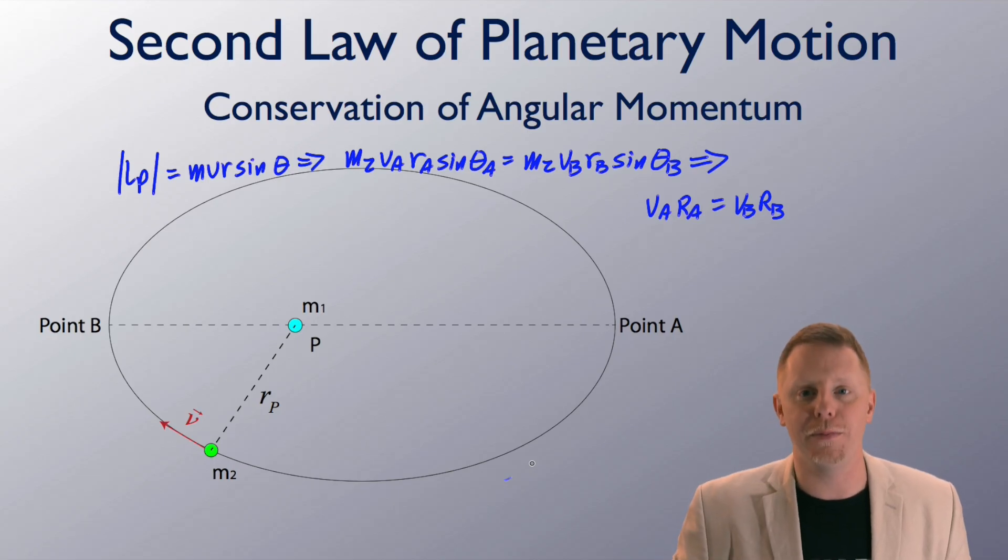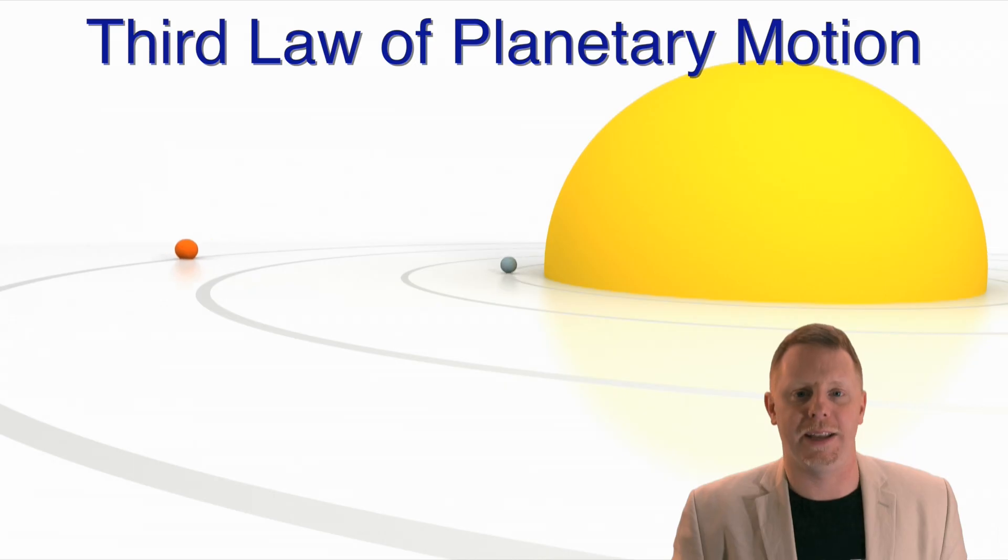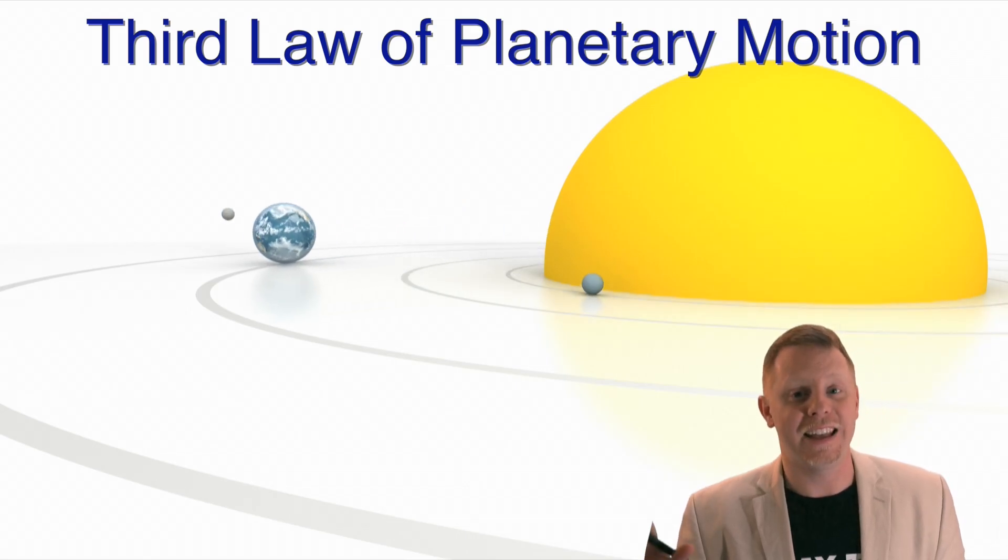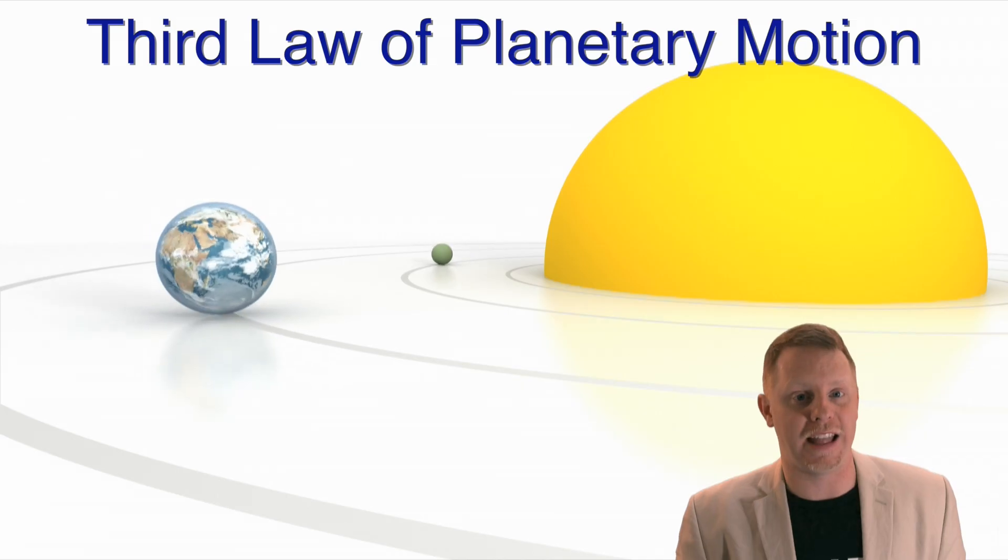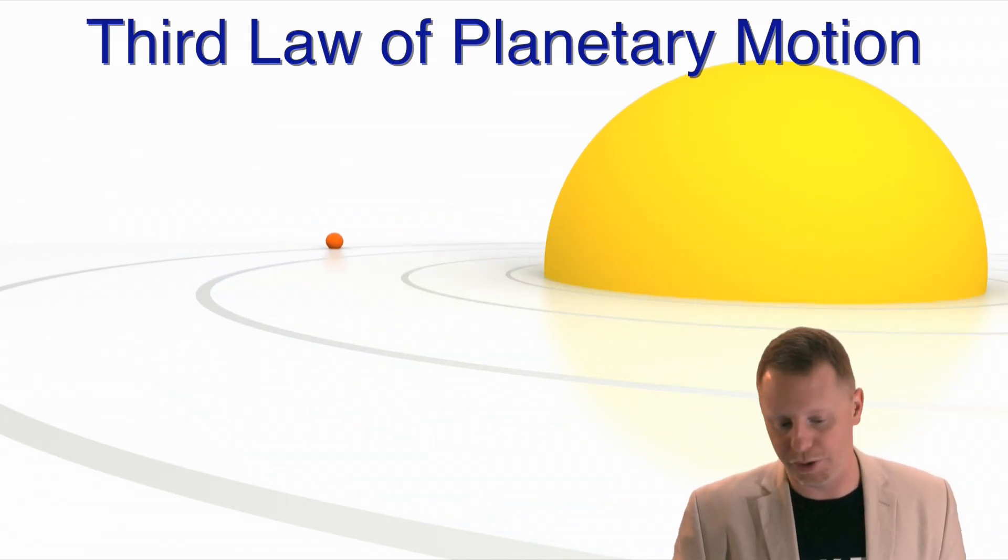His third law has a little bit more mathematical depth to it. The third law of planetary motion states that the ratio of the squares of the periods of two planets is equal to the ratio of the cubes of their orbital radii. That sounds a whole lot more complicated than it really is, but let's try to dive into it from a mathematical standpoint.